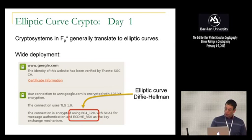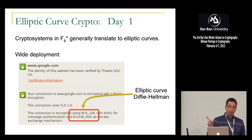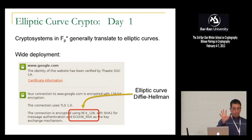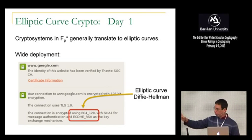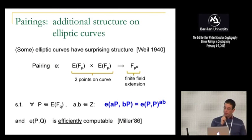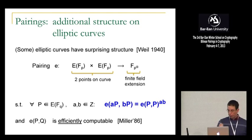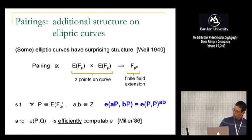It turns out though that these elliptic curves actually have remarkable properties that simply don't exist in FP star. Everything I've said so far basically translated things that we did in FP star to the group of elliptic curves. But it turns out that some elliptic curves actually have additional structure, which is extremely interesting and very useful for crypto. This additional structure was first pointed out by André Weil back in the 1940s.